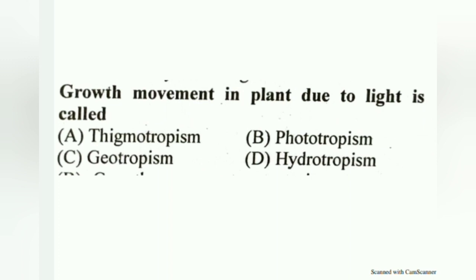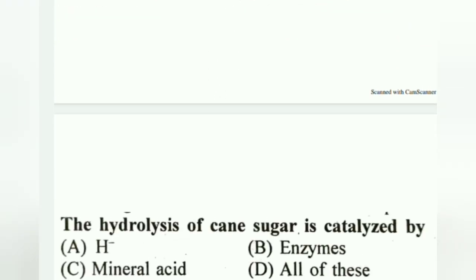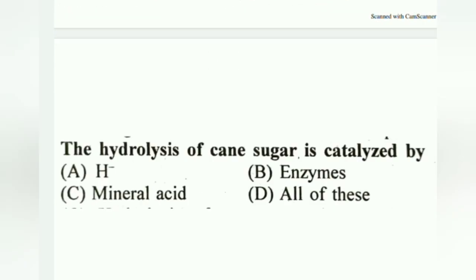Growth movement of a plant due to light is called phototropism. The hydrolysis of cane sugar is catalyzed by mineral acid.